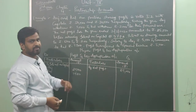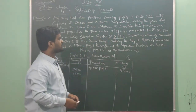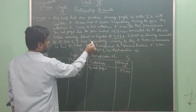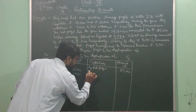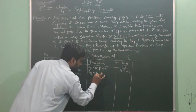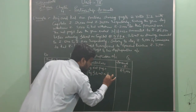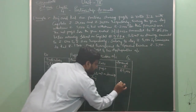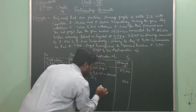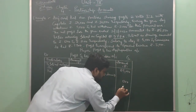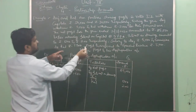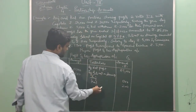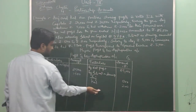The Profit and Loss Appropriation Account will be debited with salary, commission, or any other remuneration paid to the partner. Interest on drawings will be recorded on the credit side of the Profit and Loss Appropriation Account as 'By Interest on Drawings'. Aaj pays 500 as interest on drawings and Kull pays 200 as interest on drawings, as they have withdrawn rupees 5,000 and 2,000 respectively.